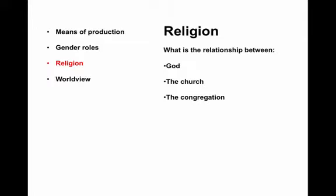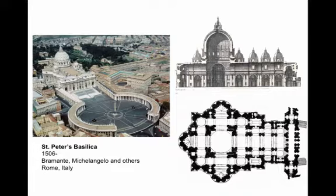Religion. The question of religion becomes: what is the relationship between God, the church, and the congregation? Let's look at three examples. In Catholicism, you get access to God and the religious realm through the institution of the church — it does not come directly. So under the dome is the priest, and then you are in the nave. The dome is for the priest, the word of God comes through here, and then out to the congregation.